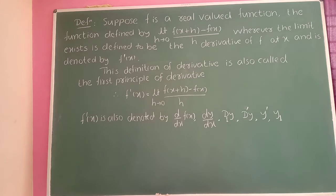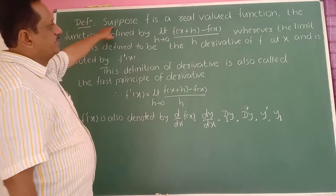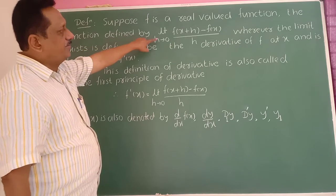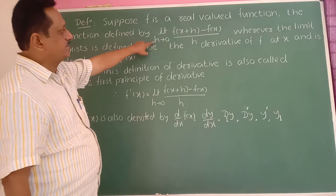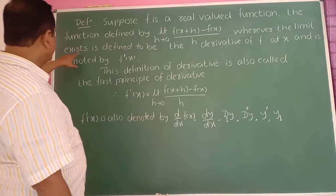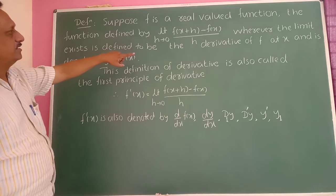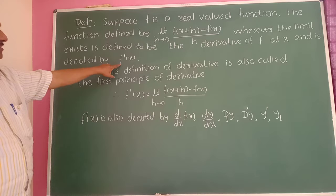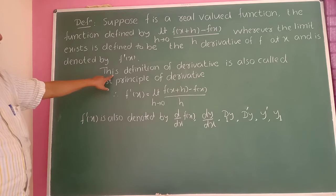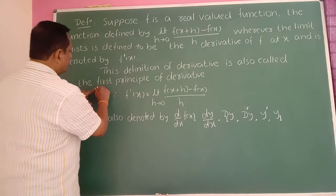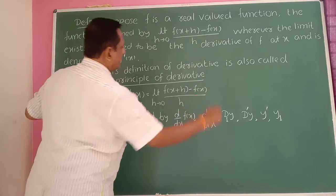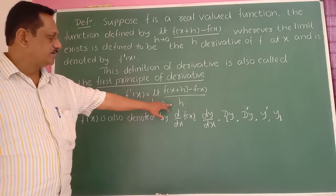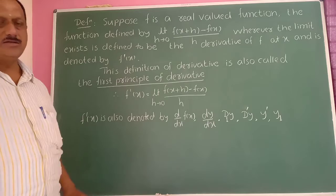In general, we define the derivative function as follows. Suppose f is a real-valued function. The function defined by the limit of f(x+h) minus f(x) divided by h as h tends to 0 — wherever this limit exists — is defined to be the derivative of f at x, denoted by f'(x). This definition is called the first principle of derivative.